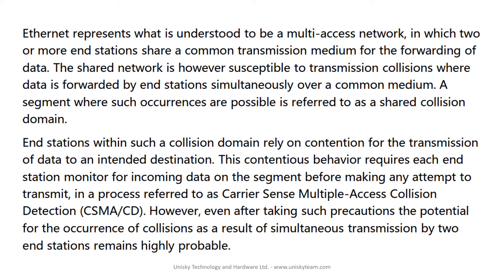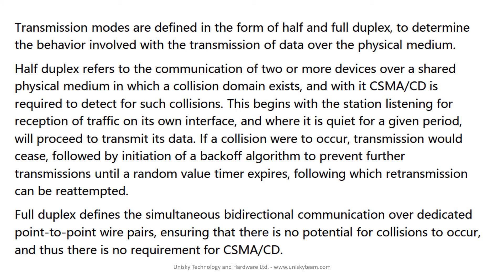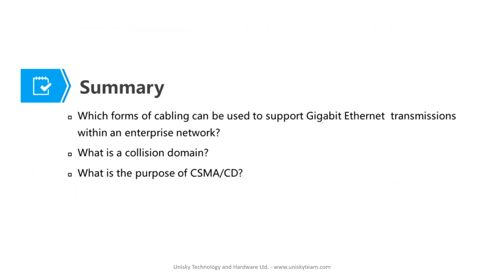Even after taking such precautions, the potential for collisions as a result of simultaneous transmission by two end stations remains highly probable. Transmission is also understood in two modes: half duplex and full duplex. Half duplex refers to communication of two or more devices over a shared physical medium in which a collision domain exists, and CSMA/CD is required to detect such collisions. Full duplex defines simultaneous bi-directional communication over dedicated point-to-point wire pairs, ensuring there is no potential for collisions, and thus no requirement for CSMA/CD. It is recommended that we use full duplex to avoid collisions on our networks.